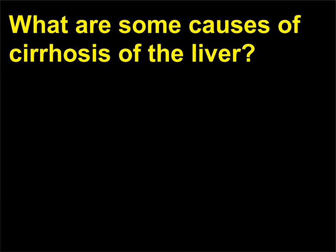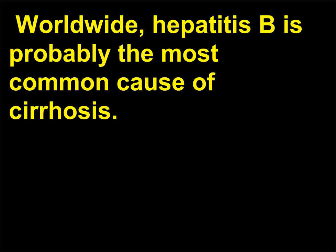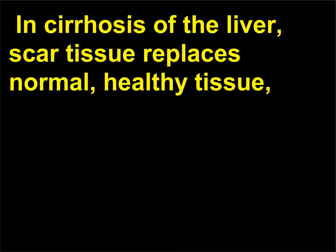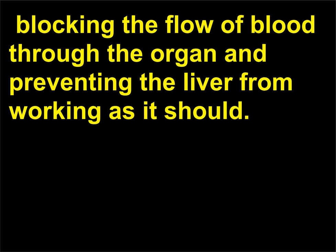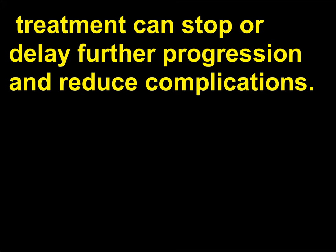What are some causes of cirrhosis of the liver? The most common causes of cirrhosis in the United States are alcoholism and hepatitis C. Worldwide, hepatitis B is probably the most common cause of cirrhosis. In cirrhosis of the liver, scar tissue replaces normal, healthy tissue, blocking the flow of blood through the organ and preventing the liver from working as it should. Although liver damage from cirrhosis cannot be reversed, treatment can stop or delay further progression and reduce complications.